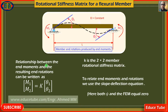The relationship between the end moments and the resulting end rotations can be written as a moment vector equal to a stiffness matrix K times a rotation vector, where K is the 2-by-2 member rotational stiffness matrix. To relate end moments and rotations, we use the slope-deflection equations.